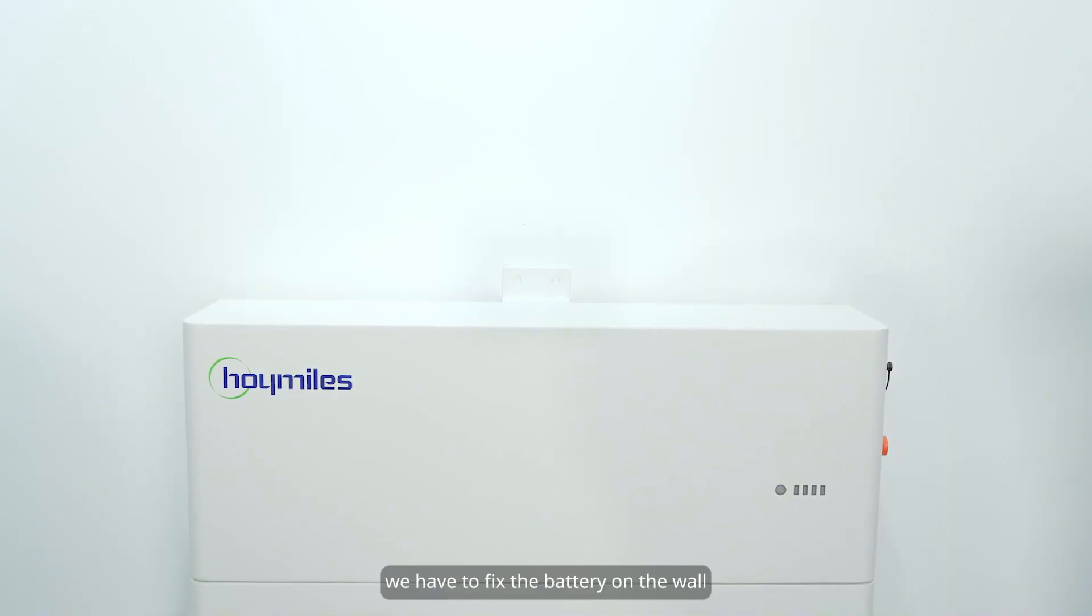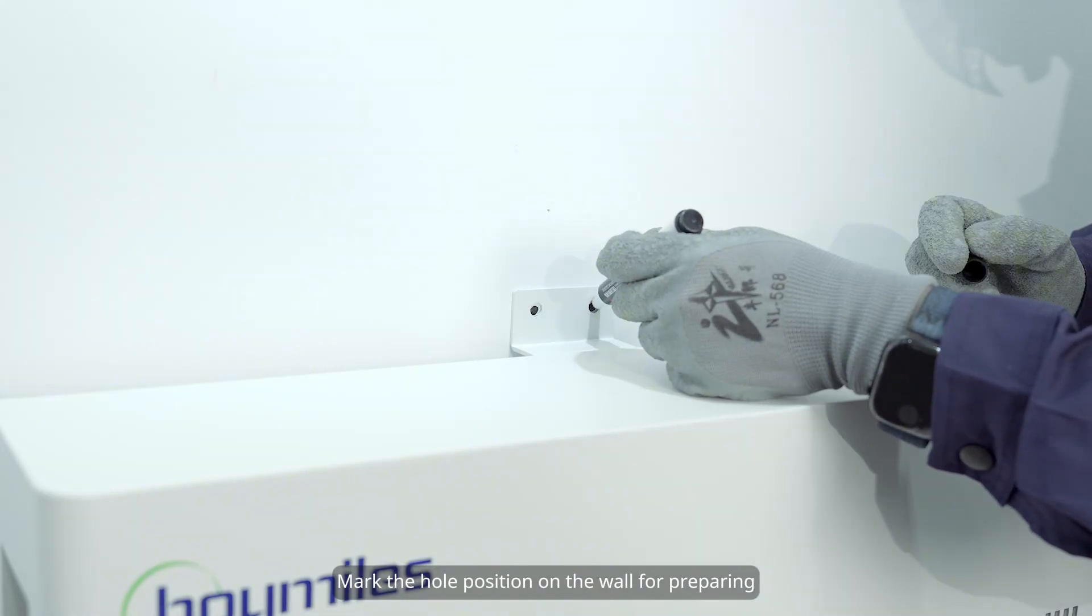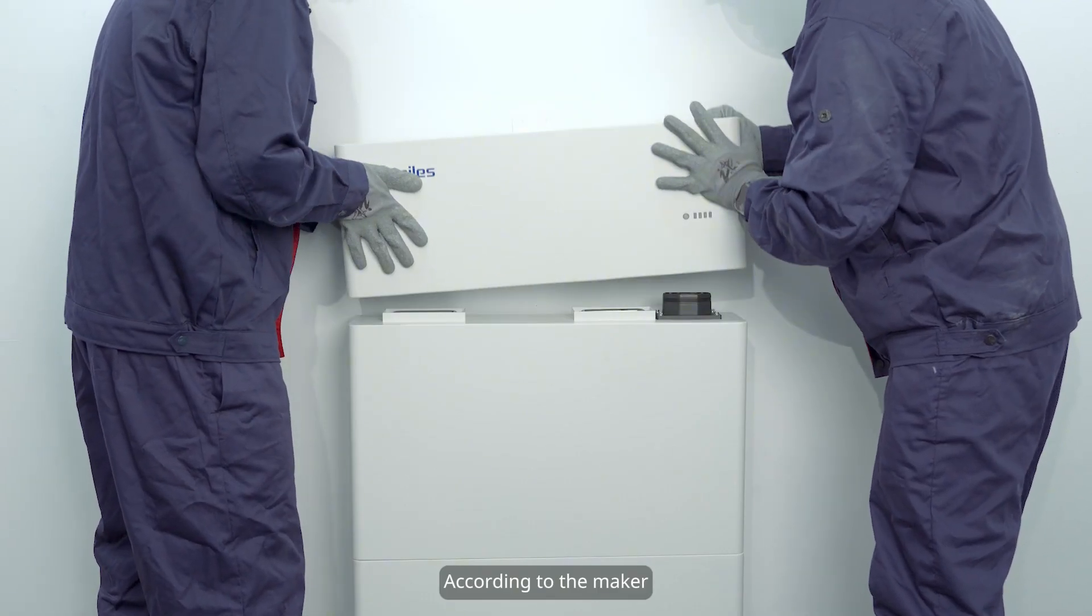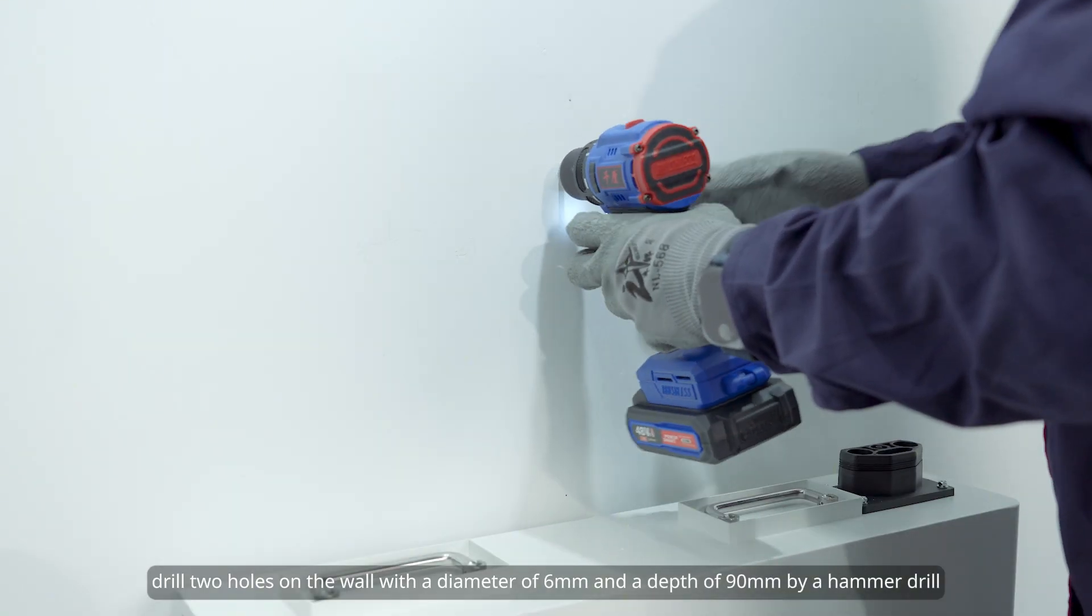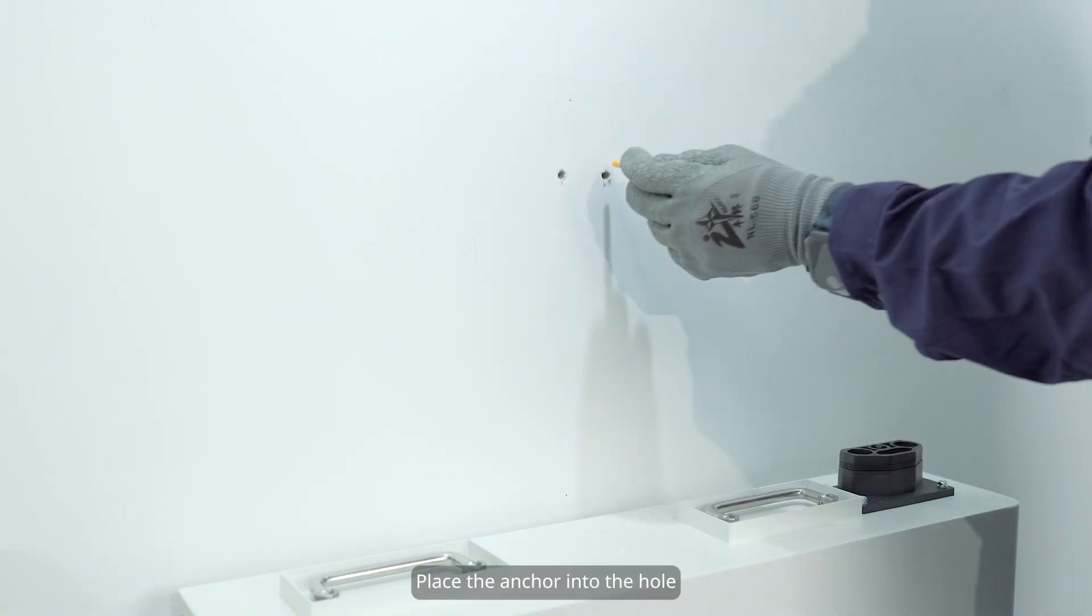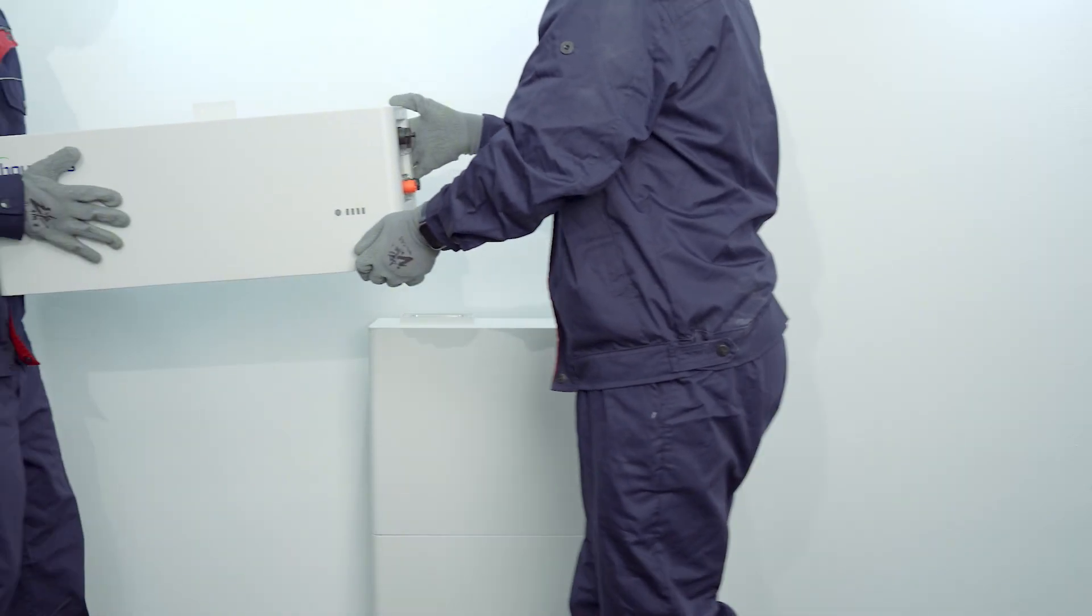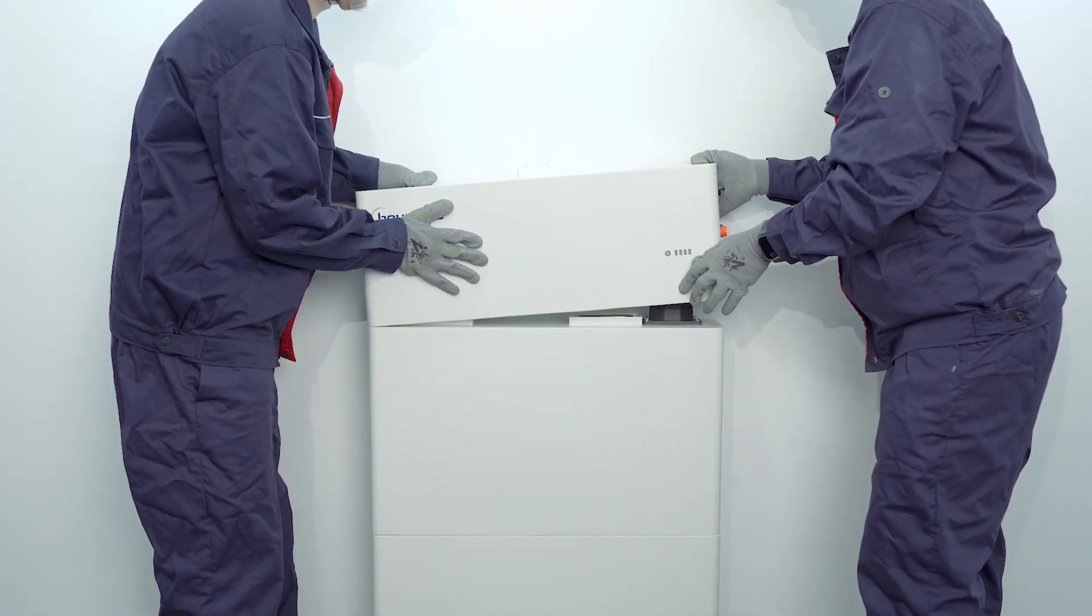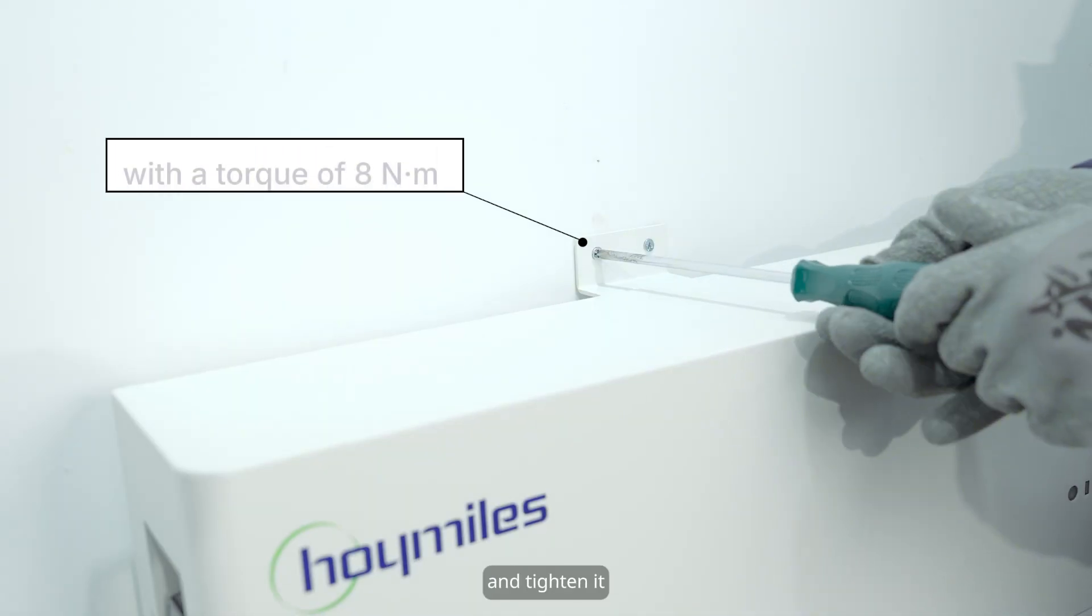The next step, we have to fix the battery on the wall. Mark the hole position on the wall for preparing. According to the marker, drill two holes on the wall with a diameter of 6 millimeters and a depth of 90 millimeters by a hammer drill. Place the anchor into the hole. Insert the M6 screw into the anchor and tighten it.